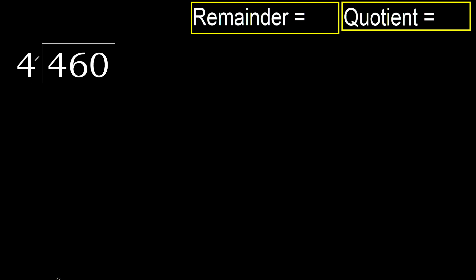460 divided by 4. Let's therefore work with 4 — multiply 4 by which number is nearest to 4 but not greater?